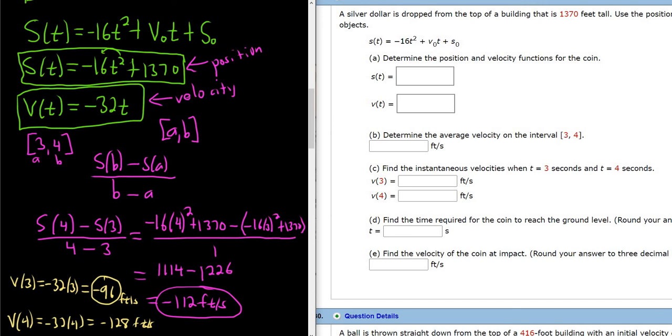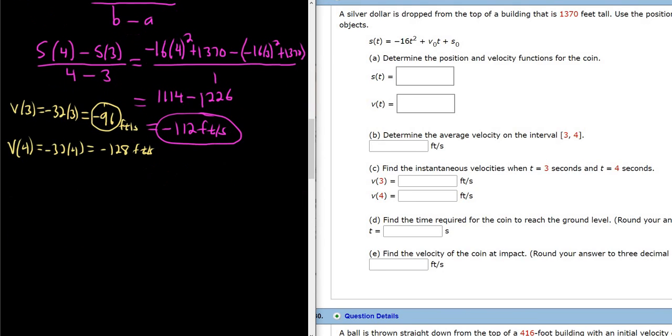Okay. Part d, find the time required for the coin to reach the ground. So the coin will reach the ground when it hits the ground. So here's the picture. So how long does it take for it to hit the ground? So remember, it's falling 1370 feet. So we need our position function for this, which was negative 16t squared plus 1370. So this is the position after t seconds. So when it hits the ground, it hits the ground. In other words, the position is zero. So to find the time required for the coin to reach the ground, you take your position function, and you set it equal to zero because you want the time it takes for the coin to be on the ground.